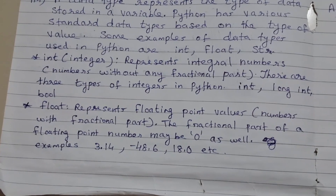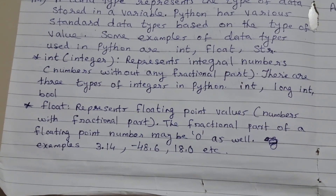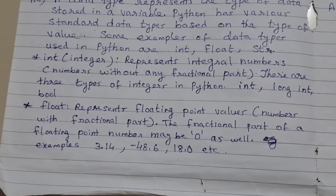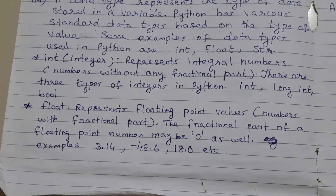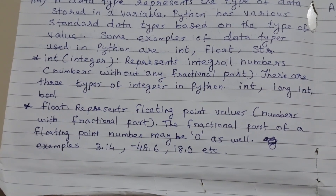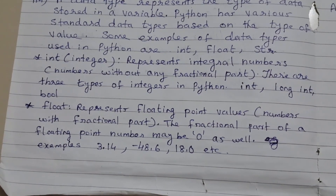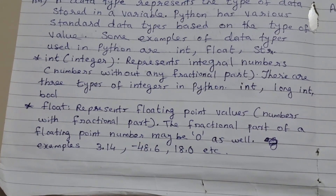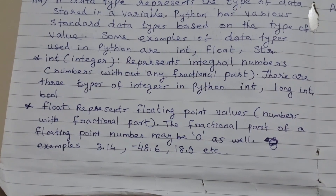Float represents floating point values — numbers with a fractional part. The fractional part of a floating point number may be 0 as well. Examples: 3.14, -48.6, 18.0, etc.